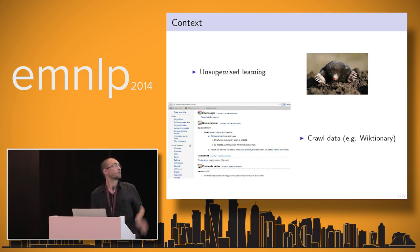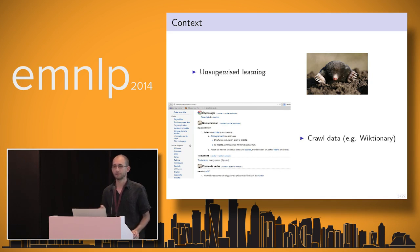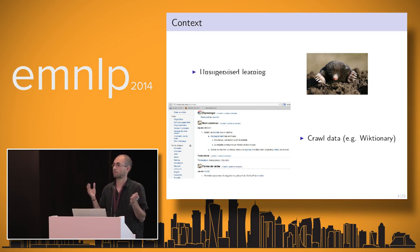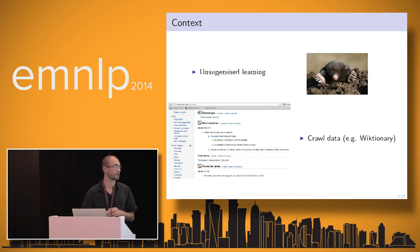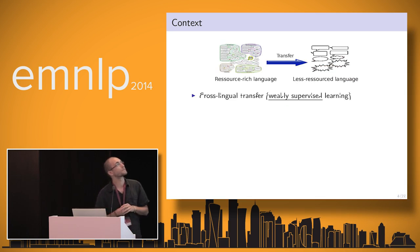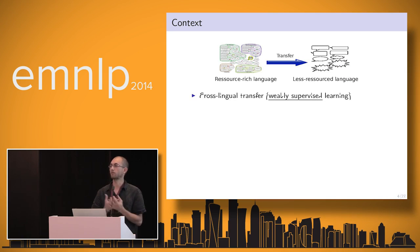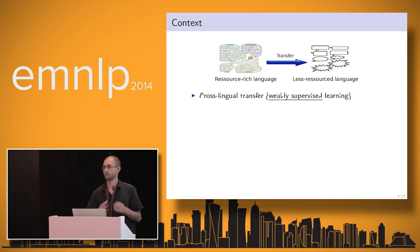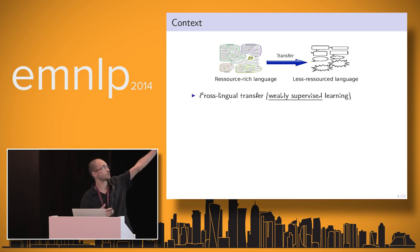Many works have focused on unsupervised learning where we try to learn without annotated data. Another solution is to crawl data from crowdsourcing or indirect sources, and to use it as a proxy for weakly supervised or semi-supervised learning. Still in the same way, something quite useful is cross-lingual transfer.